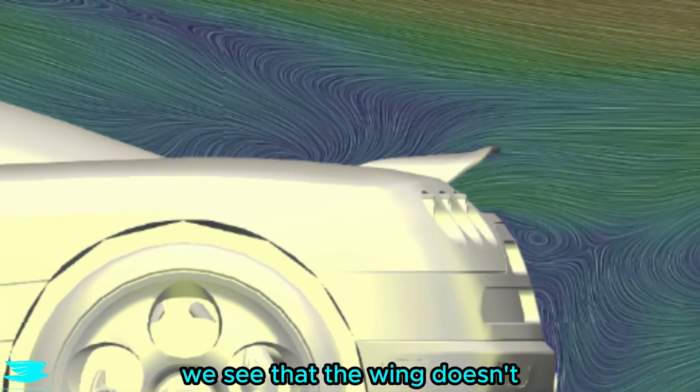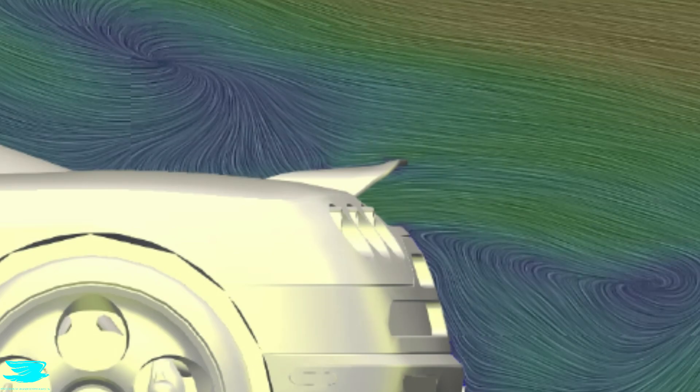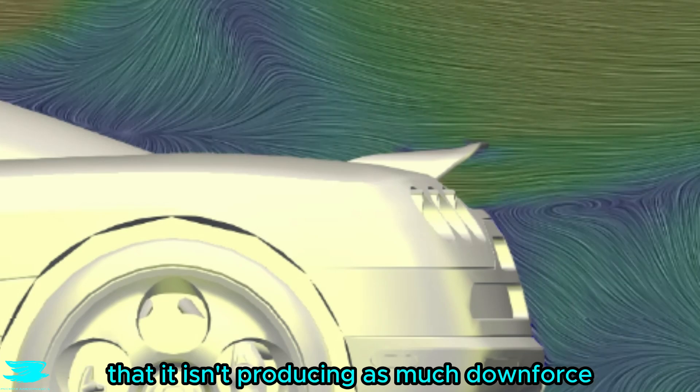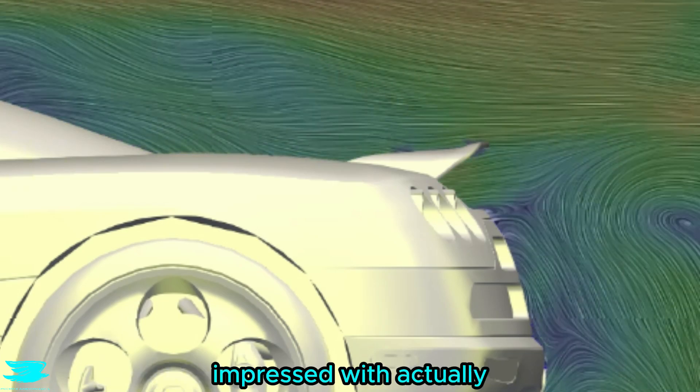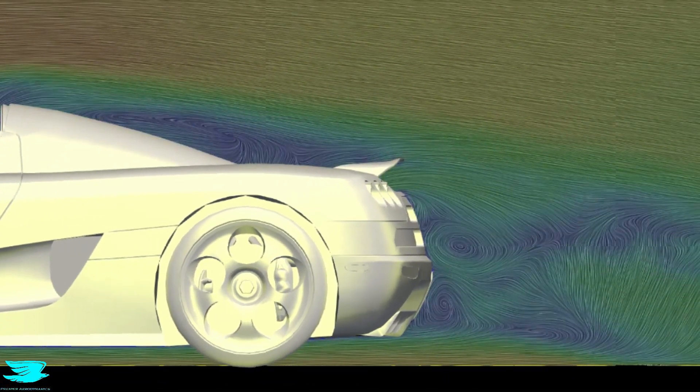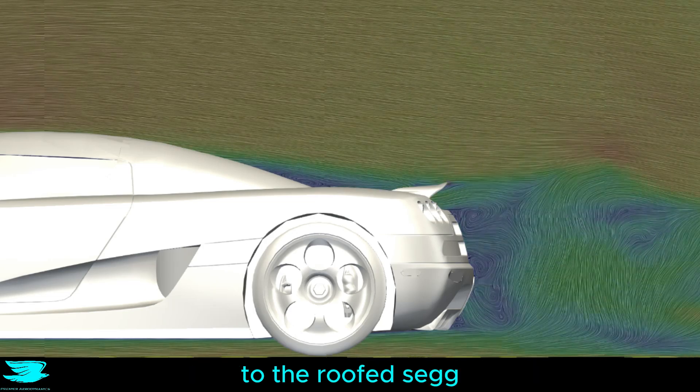Naturally we see that the wing doesn't kick up the flow as much, unlike what we saw with the roofed version, and that is a dead giveaway that it isn't producing as much downforce. Now the rear wake I'm pretty impressed with actually, because we do get a big wake from the convertible section but it doesn't make the rear wake too much worse, and it is actually quite comparable to the roofed seg.